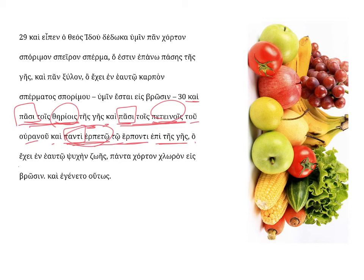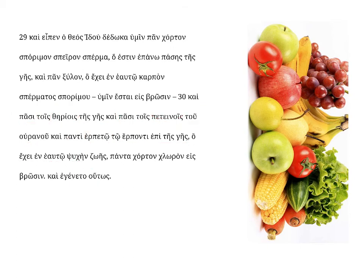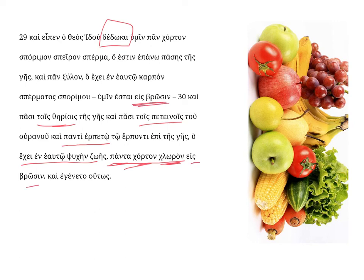Creeping thing upon the earth — ha, eche, which has in itself, psuchein zoes, the breath, or the soul, the existence of life. And then, for all these dative indirect objects — tois the reois, tois pete nois, and panti herpeto — we have to supply the verb dedoka. I have given to each one of them, which has in itself, etc., panta chortan chloron — every green plant — as food, a repetition of eis brosin.